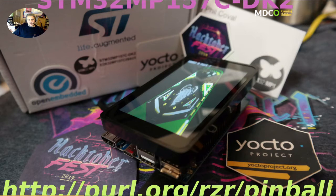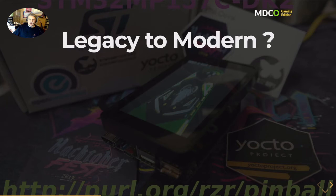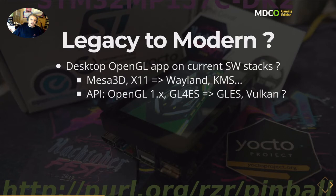But it doesn't stop here, because I wanted to port it to a single board computer, like this one from ST, using Yocto. I wanted to check how legacy software can run on modern systems. We're talking about desktop OpenGL and how it can be deployed to the current software stack, because there have been a lot of improvements lately — Mesa 3D, X11 switching to Wayland, kernel mode setting to get rid of the old graphics stack, and the 3D API evolving. From OpenGL 1, I tried to use an OpenGL ES wrapper to provide a GLES implementation, but probably the future should move to the Vulkan API.